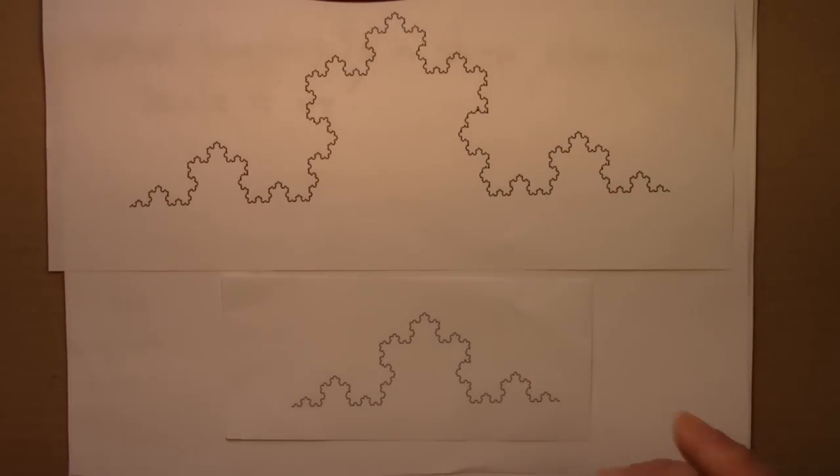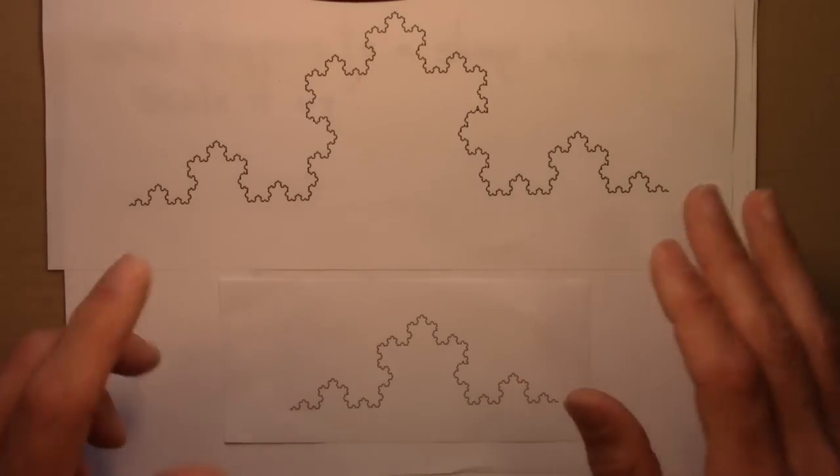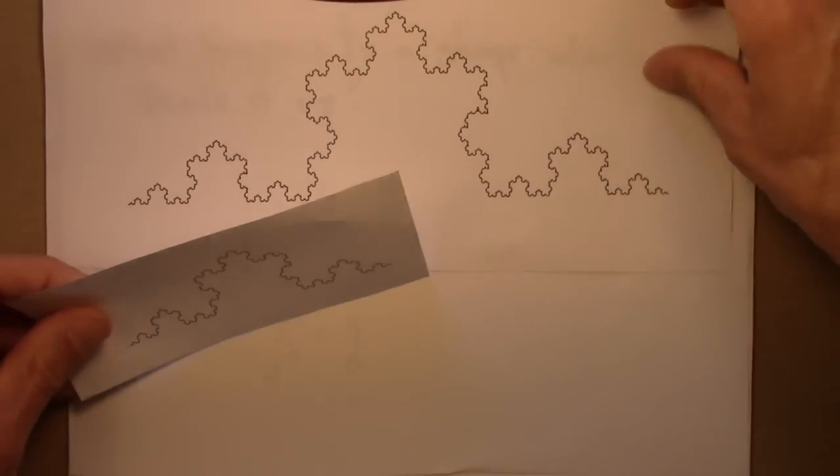And you might think, oh, well, it's a line, so it would just be twice as big, but it doesn't have a dimension of one. It's actually not a line. It's a fractal. It's in between dimension one and two.